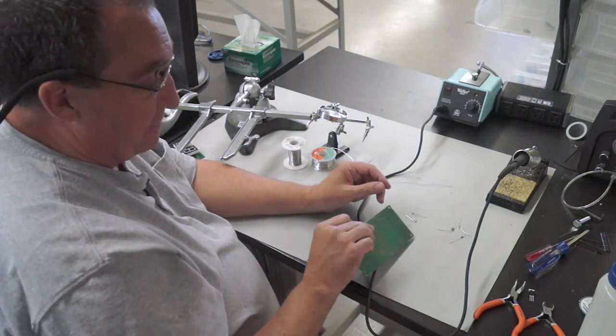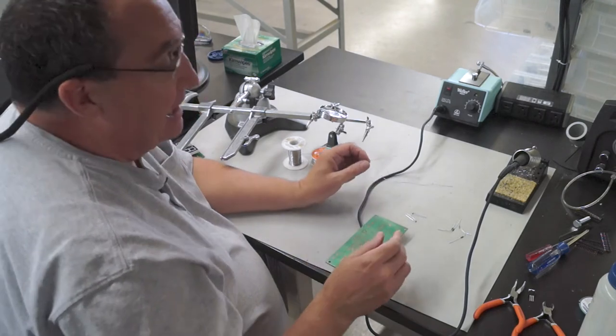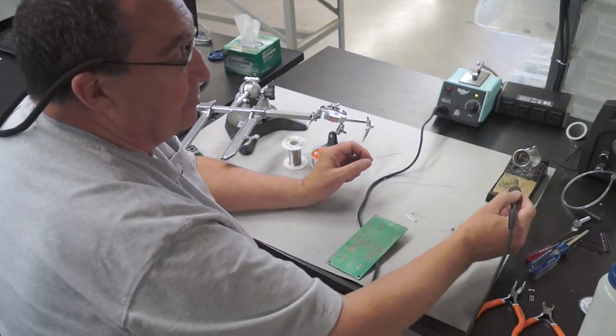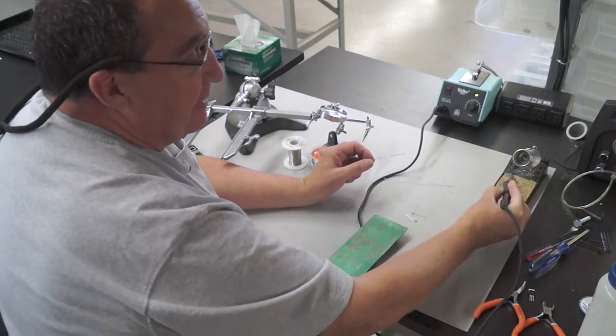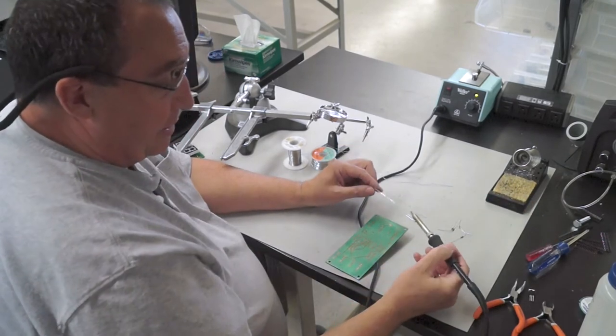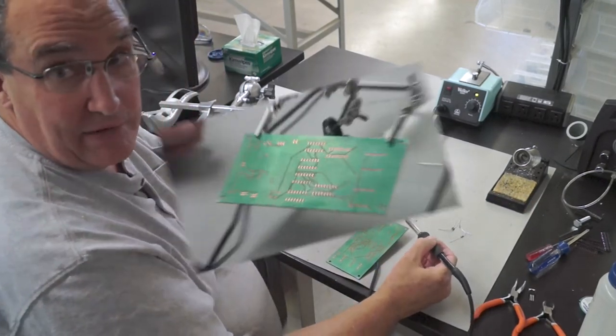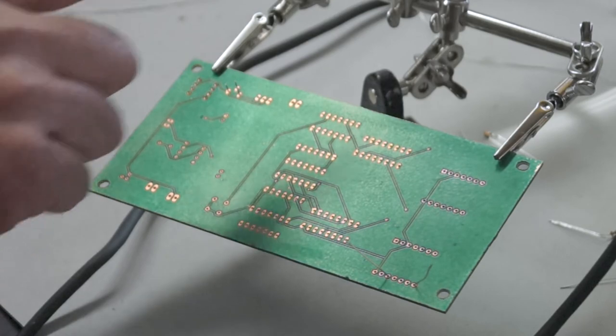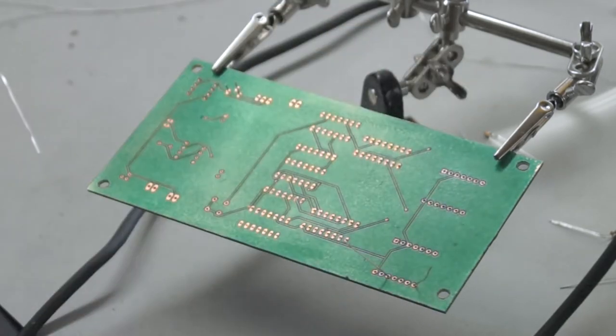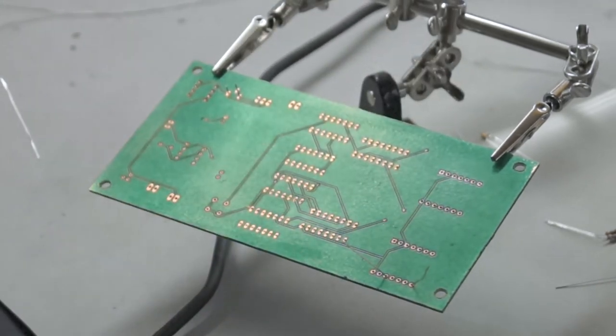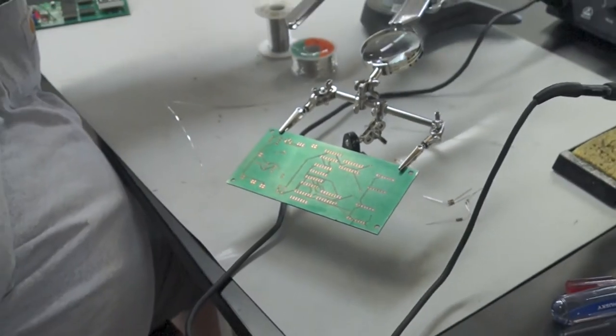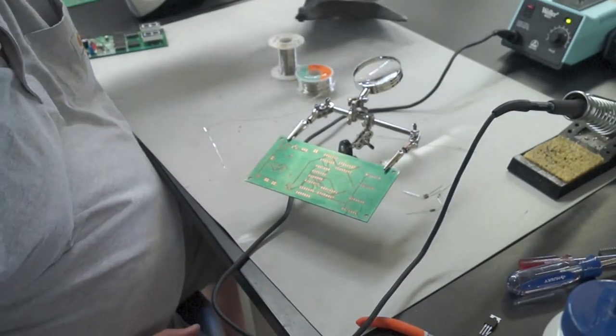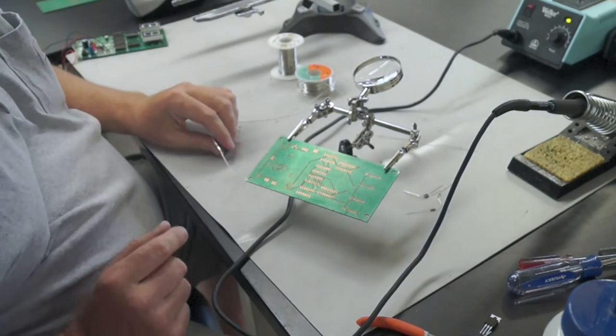Once you've got your parts placed, now we're going to flip it over to the back side and we want to begin the soldering process. We'll clean off our iron and now we'll get ready to actually do the solder. Here in our lab, we have several stands. I'm using a little thing called Helping Hands that has some alligator clips to hold the board.